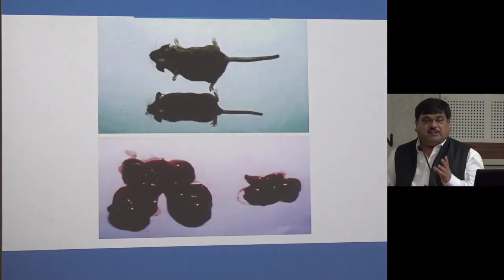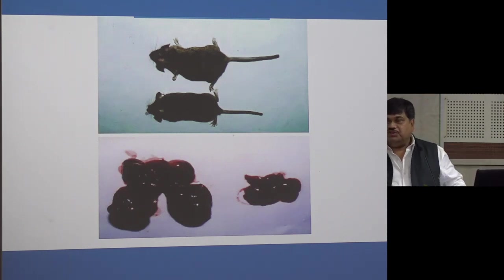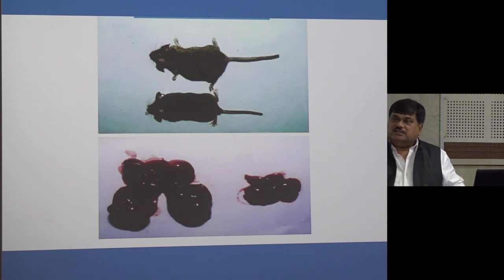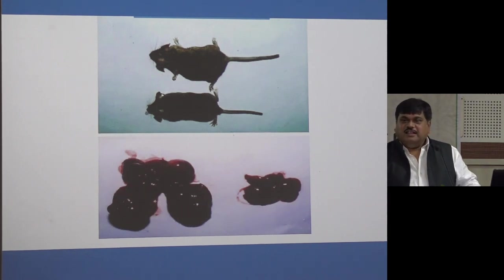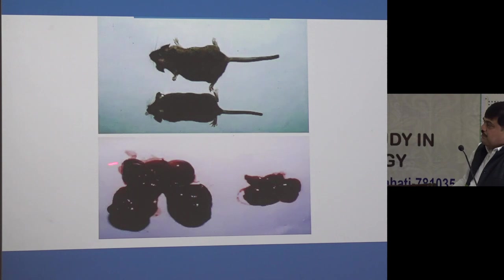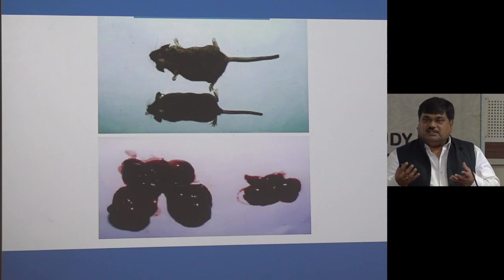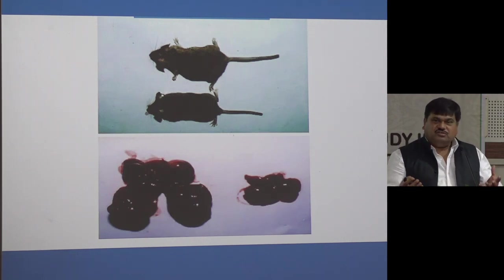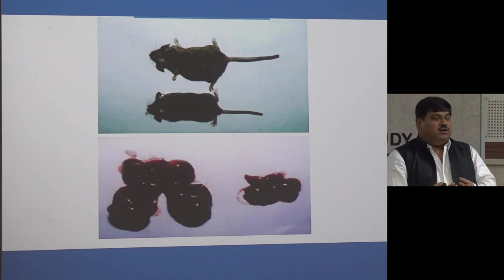The first transgenic animal in this country was made at the National Institute of Immunology. We knew that the Hepatitis B VX gene was assumed to cause viral hepatitis and possibly liver cancer, but no one knew for certain. We inserted that gene into mice — a control animal without the gene shows a small liver, while the animal with the inserted gene shows a big liver — giving us a model of hepatitis with cancer progression.